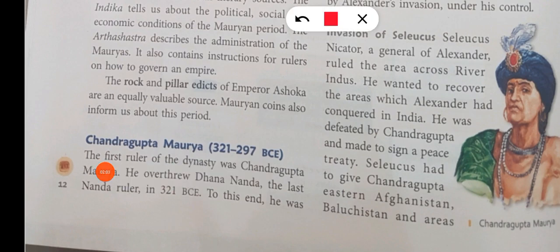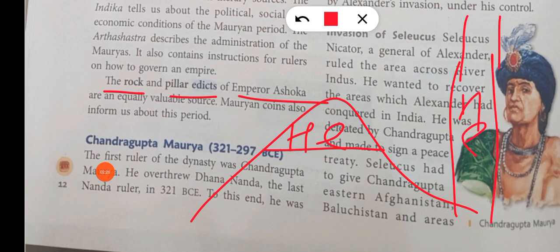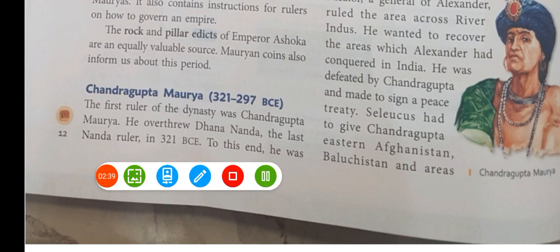Other sources include the rock and pillar edicts of Emperor Ashok. Emperor Ashok had a lot of rocks and pillars engraved, and they are also an important source. When we write on rocks, we call it a rock edict; when written on pillars, pillar edicts. Mauryan coins also provide information about the period.